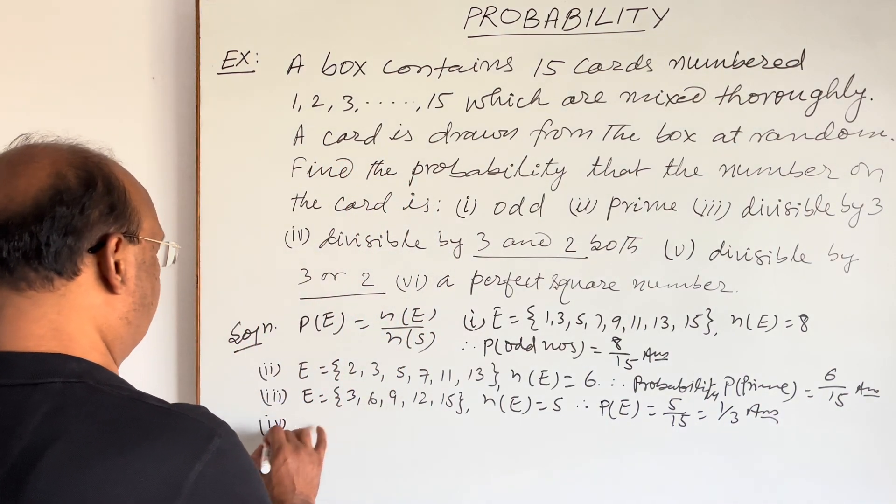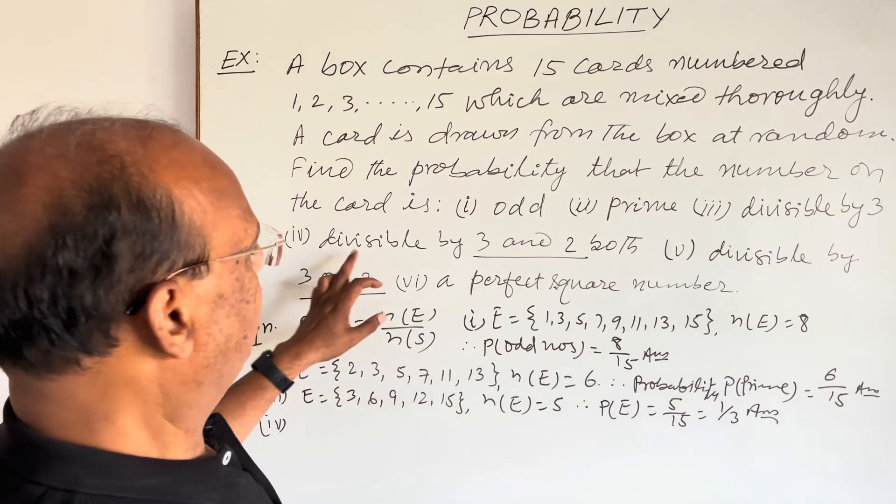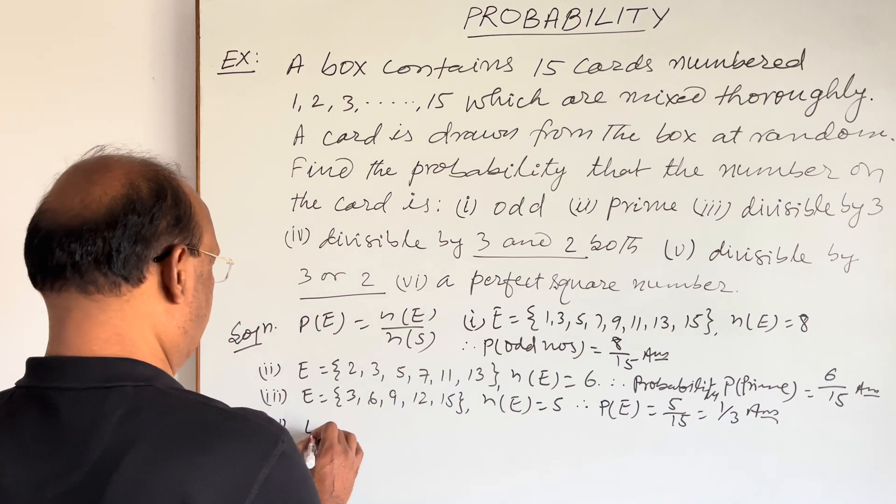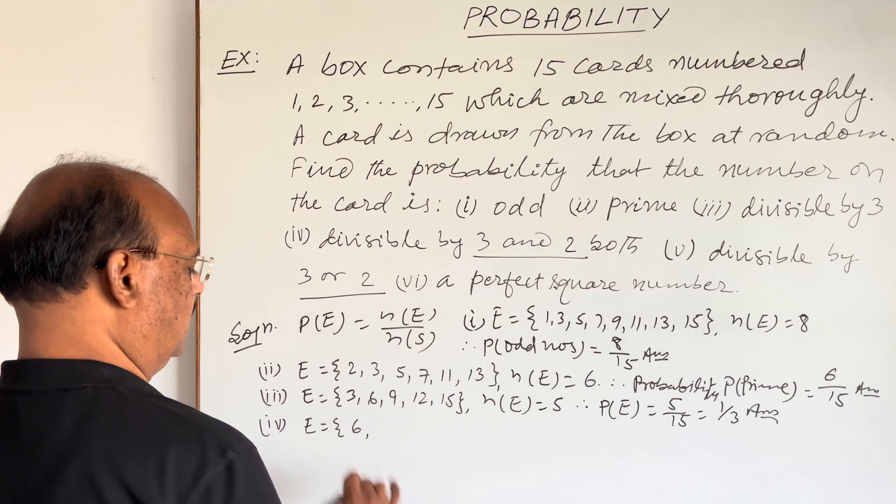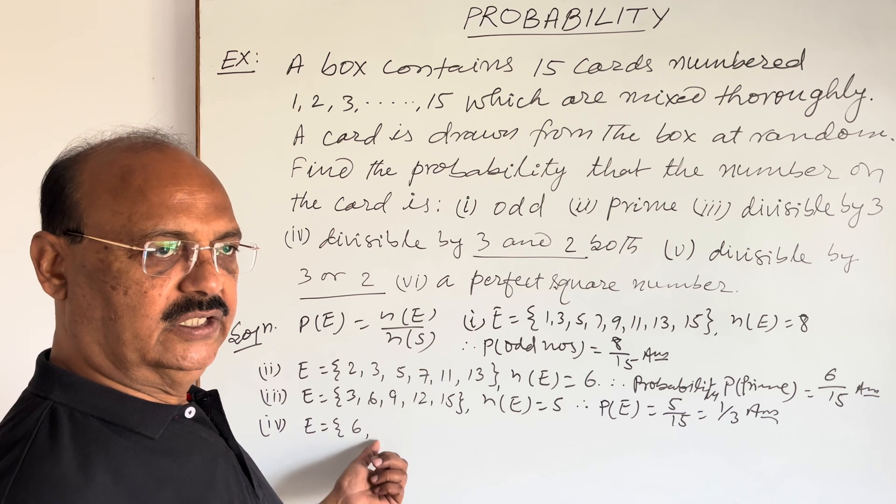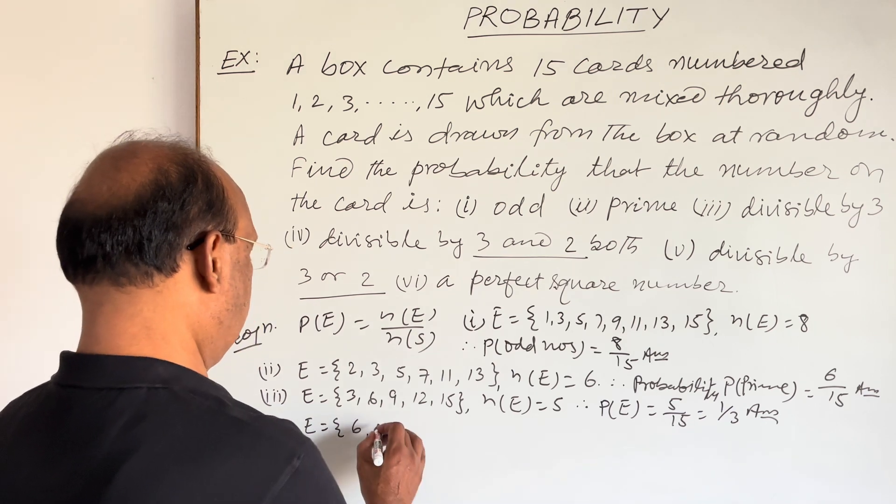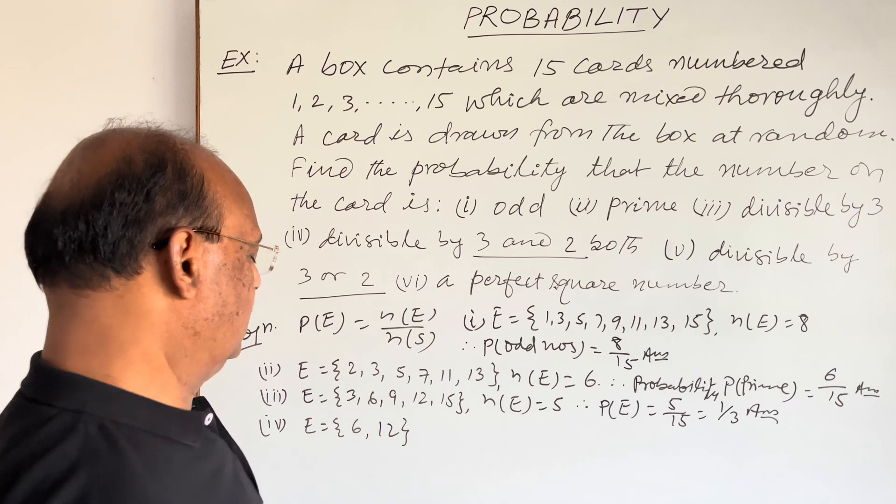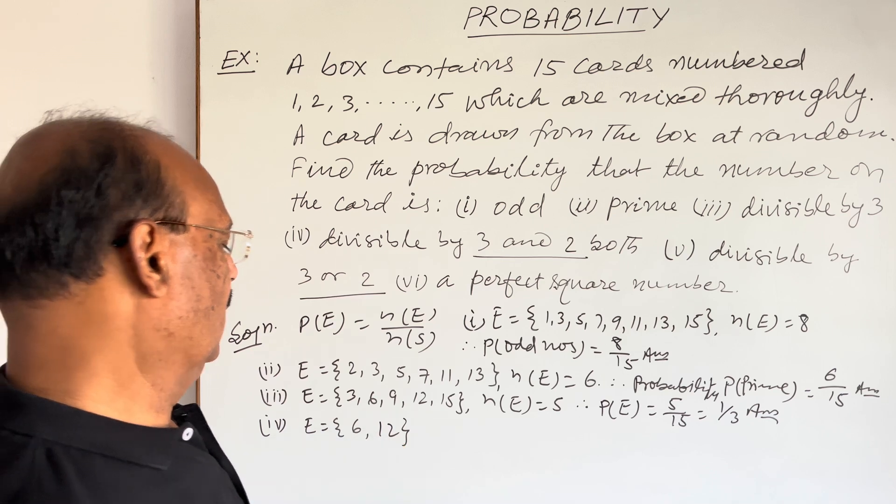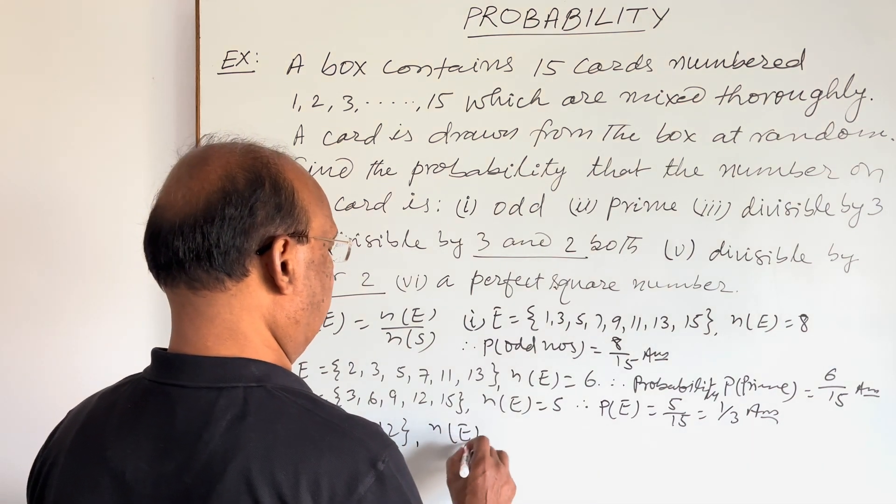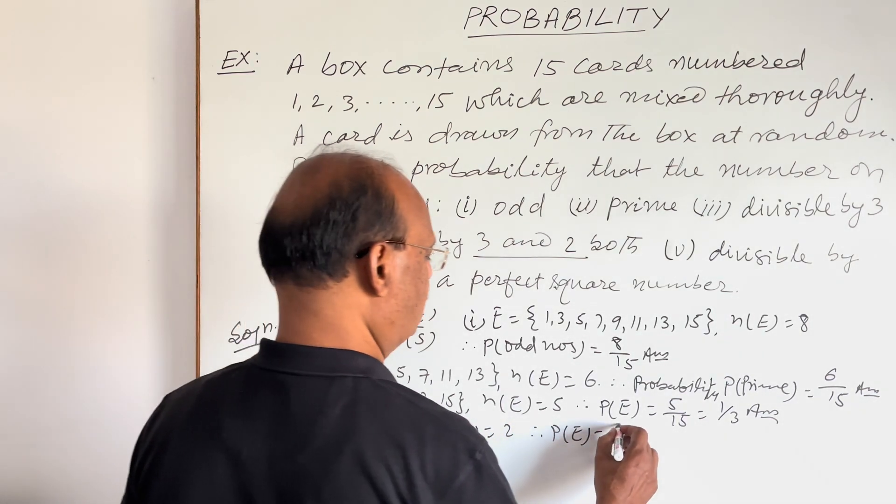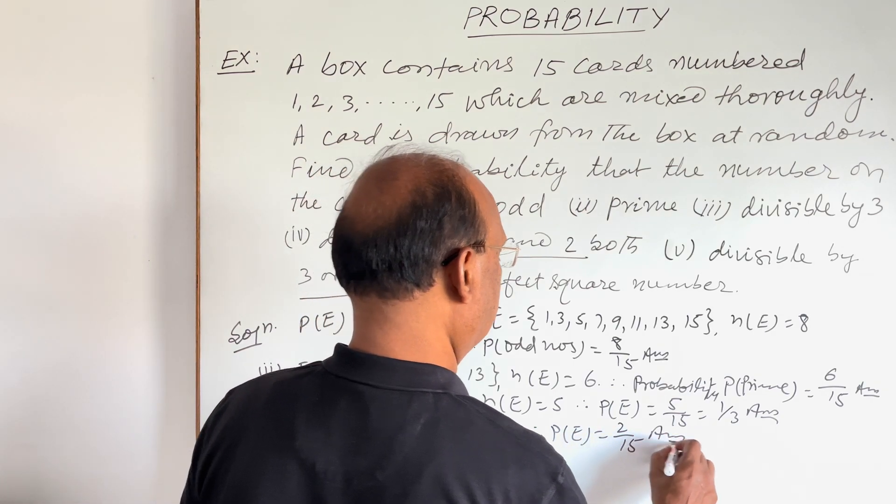Now let us see fourth part here. Fourth is divisible by 3 and 2, both. So here, event will consist of 6, because 6 is the number which is divisible by 2 and 3 both, and then 12. Only these two numbers between 1 and 15 are divisible by 2 and 3 both. So in this case, we are getting n(E) is equal to 2. Therefore, probability will be n(E) by n(S) means 2 by 15. This is the answer.